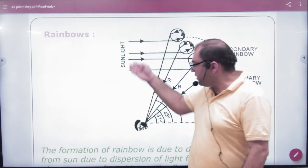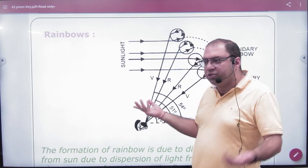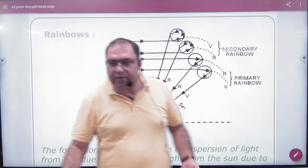The observer is standing here, the sun is behind. The rainbow is being formed in front. You should see it. When it happens, it is dispersion.